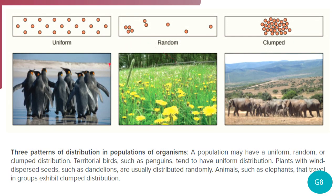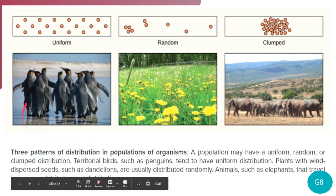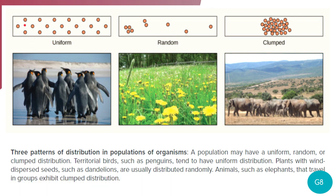Uniform dispersion is shown by territorial birds such as penguins, which keep a safe distance from each other to have their own feeding area. Arboreal birds build their nests far apart so their offspring have enough space to fly and hunt. Random dispersion has no pattern — wherever the wind blows seeds or spores, that's where plants like dandelions grow. Clumped dispersion is shown by herd animals like elephants, which travel in groups so that the weakest and oldest are protected.